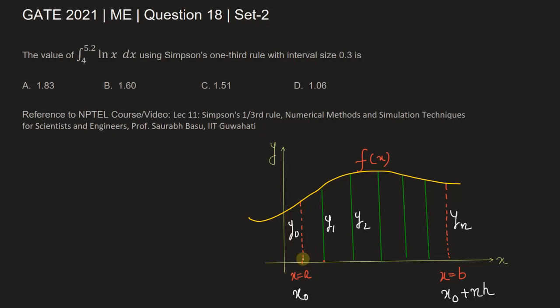What is h here? h is the equal spacing of these intervals, so the length of the interval is called h. This point becomes x₀ plus h, this point becomes x₀ plus 2h, and so on.